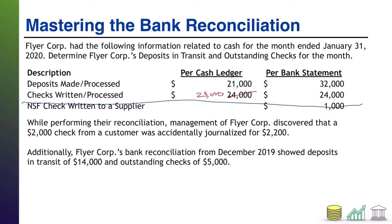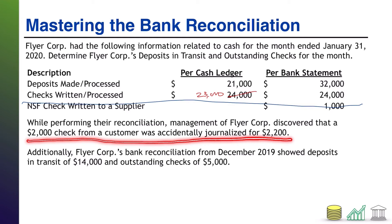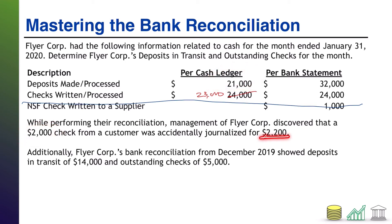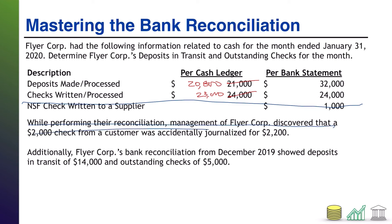Next piece of information: while performing their reconciliation, management of Flyer Core discovered that a 2,000 dollar check from a customer was accidentally journalized for 2,200. Since it's a check from a customer, that's a deposit. You only received 2,000 dollars but recorded 2,200, so the 21,000 in deposits is 200 too high. We need to correct that — the actual deposits per the books are 20,800. That uses our second piece of information.